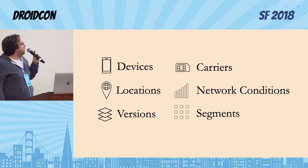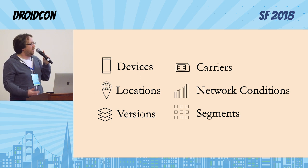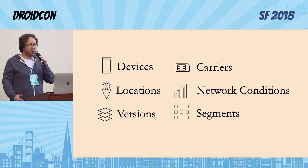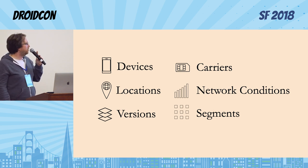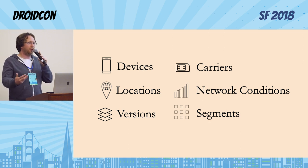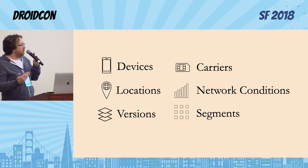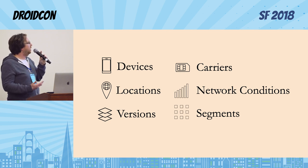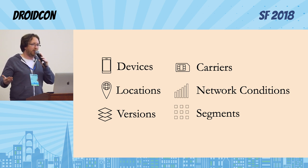There's also carriers — looking at how your app is performing on different carriers for different regions can be useful. Also locations themselves — making sure that for each of your locations you're having a uniform performance. Typically what you'll see is some locations are better than others, and that just means whatever locations might not have been optimized.